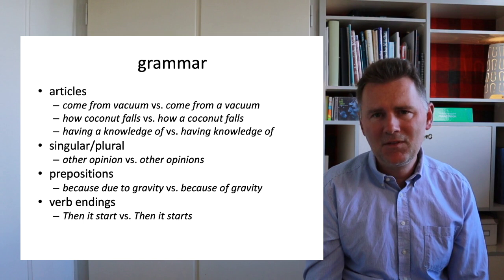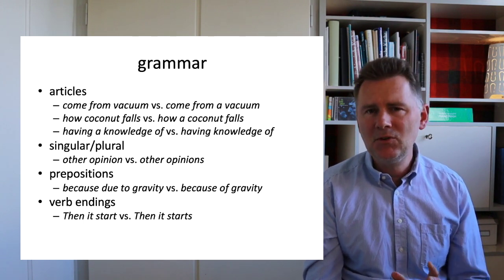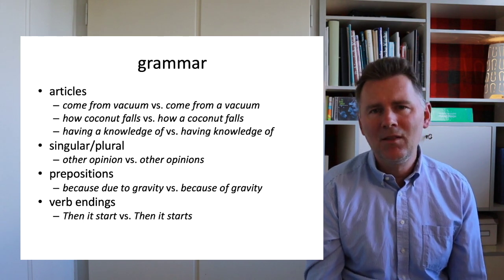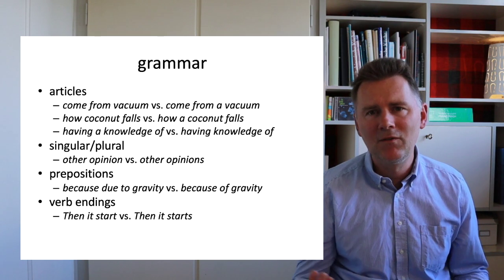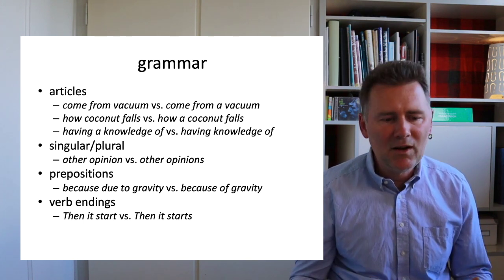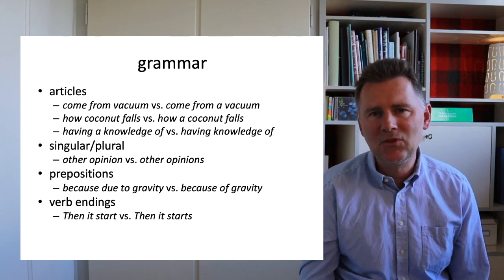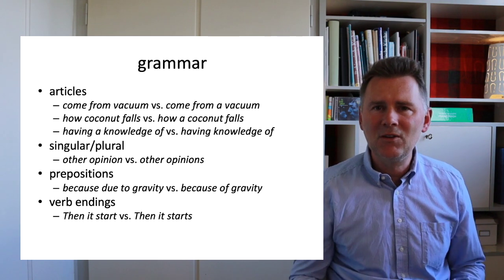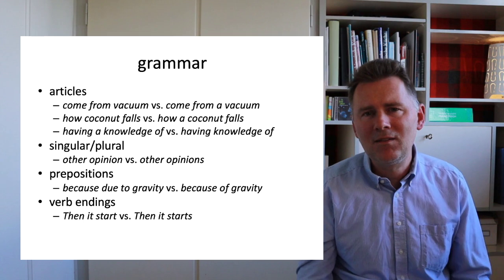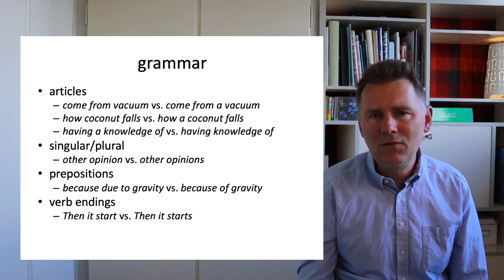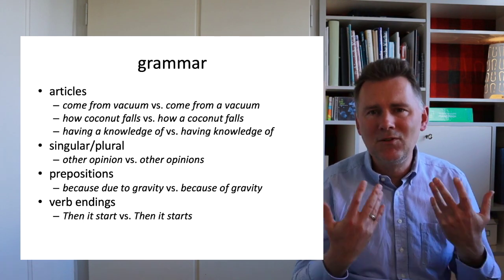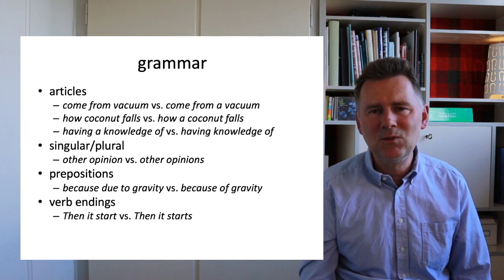Let me come to some grammatical differences. One difference is that our speaker uses articles in a way that differs from standard American English or standard British English. For example, when he says 'come from vacuum,' that would correspond to standard British English 'come from a vacuum' with an indefinite determiner. Similarly, 'how coconut falls' would be 'how a coconut falls' in standard English. It's not always that articles are missing — he also says 'having a knowledge,' where standard American English would use 'having knowledge' without the indefinite determiner.